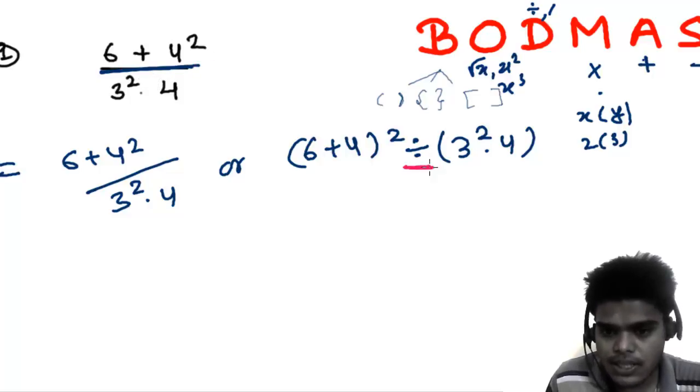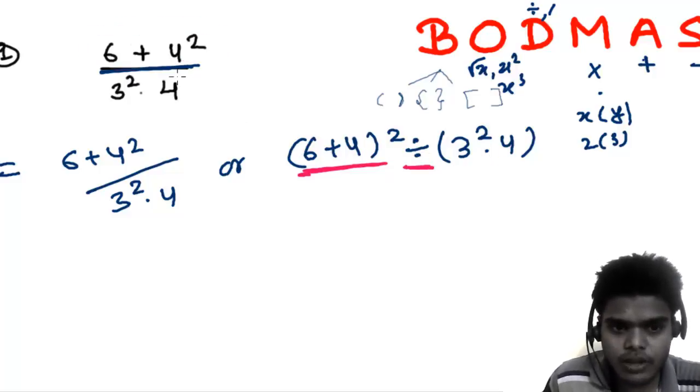Keep that in mind - remember this whole as one thing and this whole as one thing. Not that if you remove these brackets, probably you will see 4 divided by 3 squared. Not in that way. This whole thing is one - numerator you need to consider one, and denominator you need to consider one.